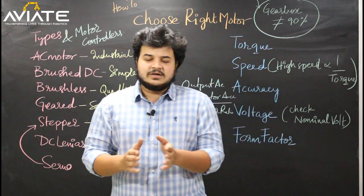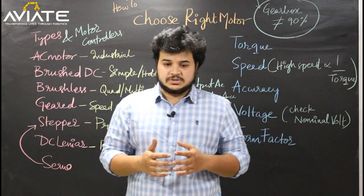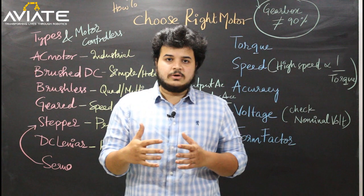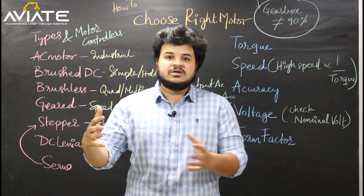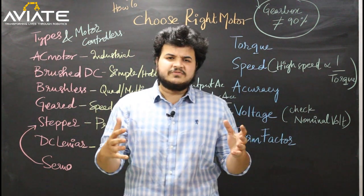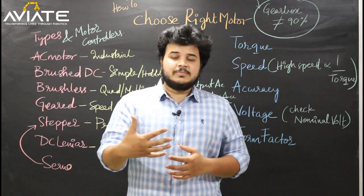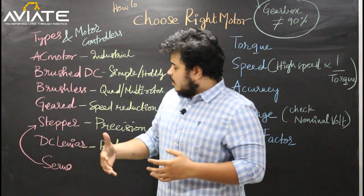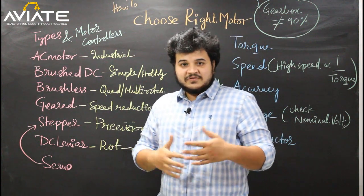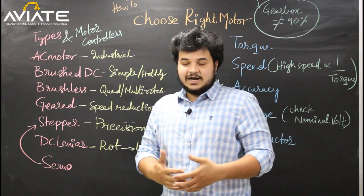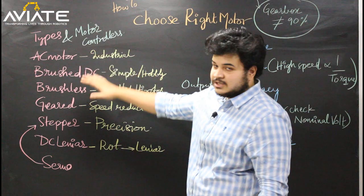Frankly speaking, the classification of motors is nowhere limited because there are multiple combinations — from rotational to linear, linear to rotational. There are multiple different combinations through which we can drive a robot. But making it a short and feasible list with the available products in the market, these are the types of motors that are available.